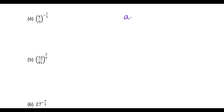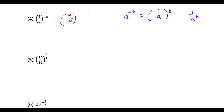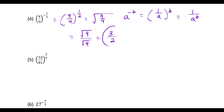For question 4, remember this rule: a to the negative b is the same as 1 over a to the b. A negative exponent can be eliminated by taking the reciprocal of the base. So we rewrite (4/9)^(-1/2) as (9/4)^(1/2), which is the square root of 9 over 4. Using properties of radicals, that's the square root of 9 over the square root of 4, which is 3 over 2.